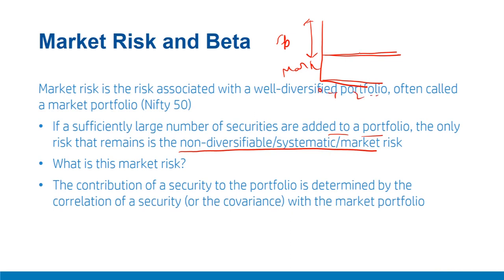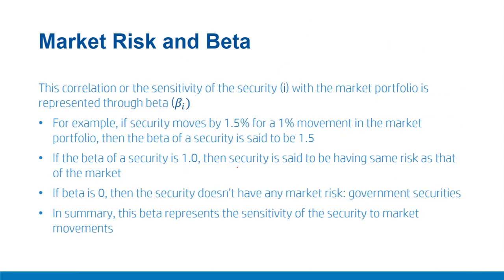Market risk is the bedrock of risk with two components: idiosyncratic stock-specific risk and market risk driven by correlation across securities. As you keep adding securities, after a sufficiently large number, the stock-specific risk is eliminated and tends to zero — with even 30 to 50 securities it can be completely eliminated. Market risk, however, is not eliminated with diversification; it sustains. When a new security is added to a portfolio, its contribution is determined by its correlation with the market portfolio.